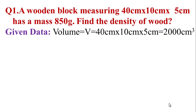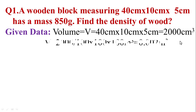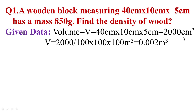Length, width and height is equal to volume. So, volume V is equal to 40 cm x 10 cm x 5 cm. 10 x 5 = 50, and 50 x 40 = 2000 cm³. To convert cm³ to m³, we divide 3 times by 100, because 1 meter = 100 cm. So the final answer of volume is equal to 0.002 m³.